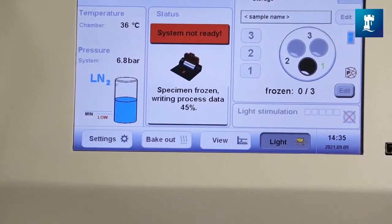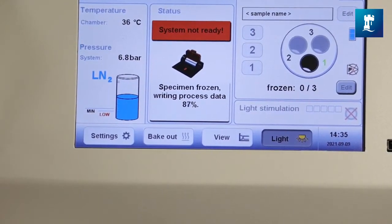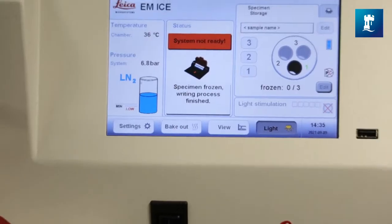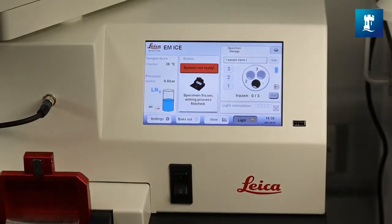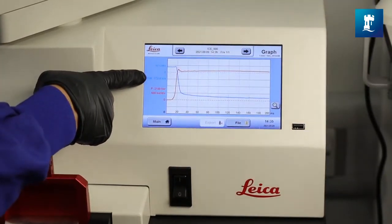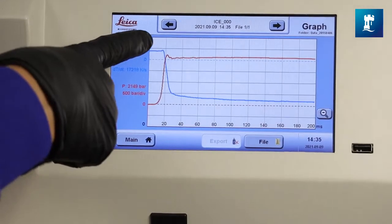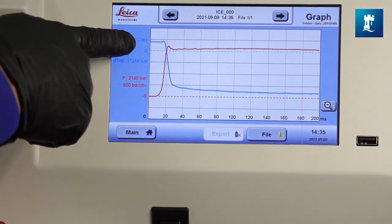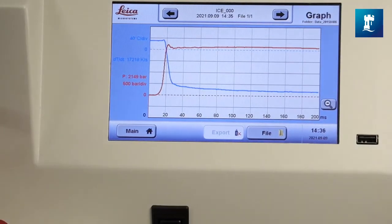Freezing cycle performance is monitored by the instrument and you get a readout in the form of a graph which shows you the change in temperature and the change in pressure over time. These two should intersect at zero and the value of dT over dT should be greater than 15,000 and then you know that you've got good system performance.